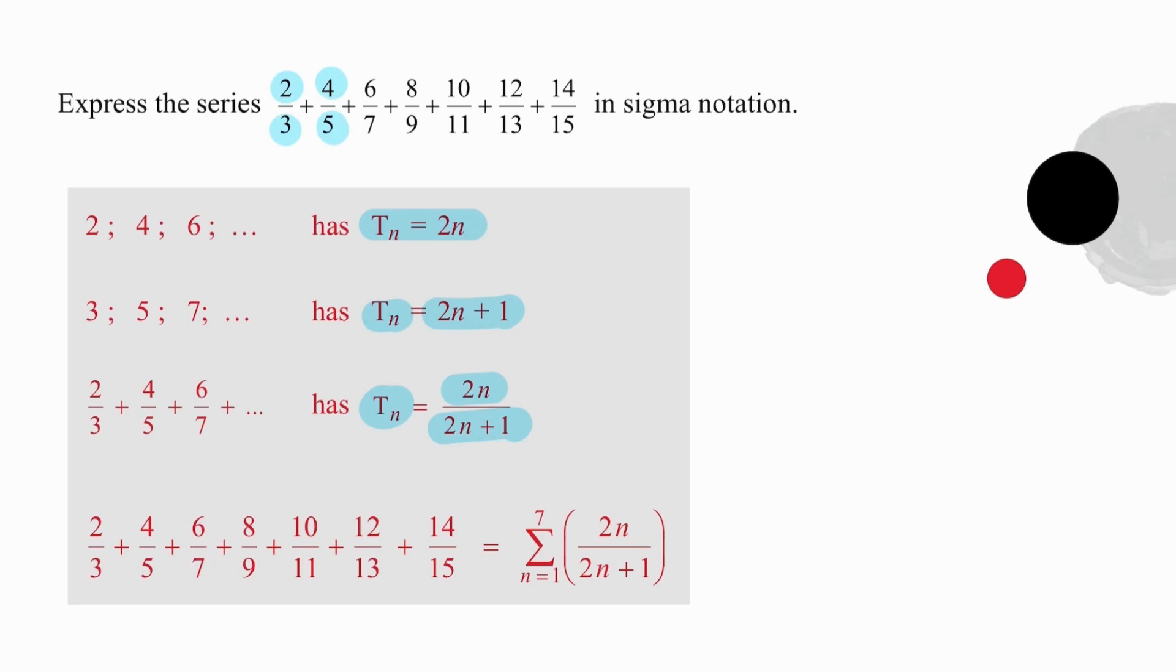There are 7 terms, because we can count the number of terms in this sequence. Or, we equate the formula that we have generated with the last term that we have been given, which is 14 over 15, and work out the value of n that solves that equation.